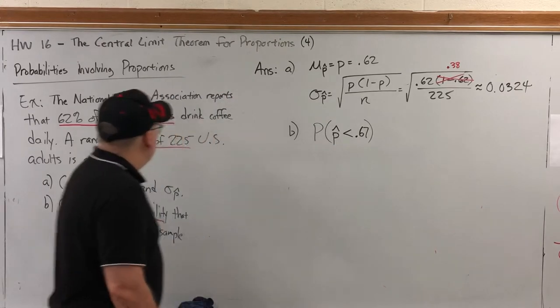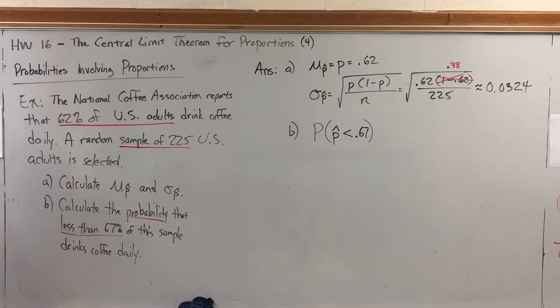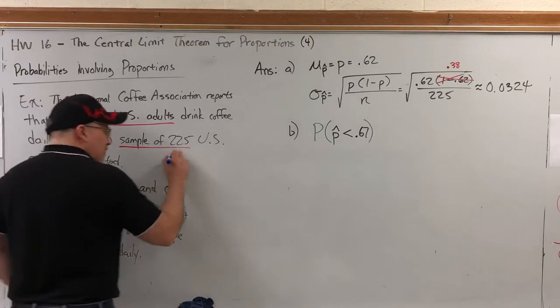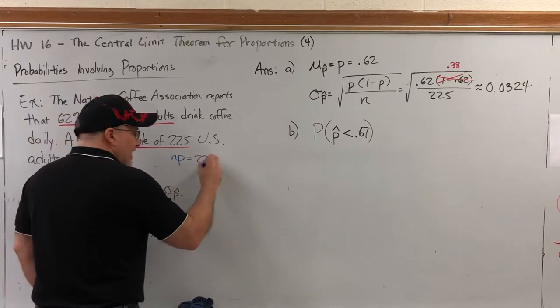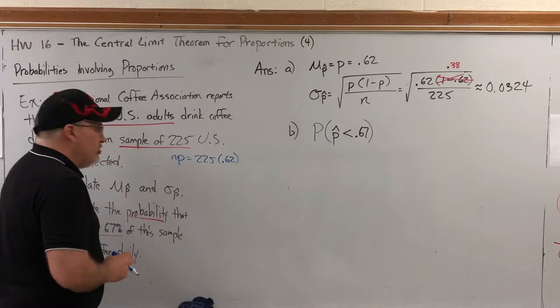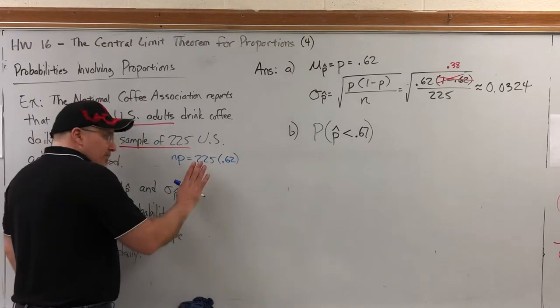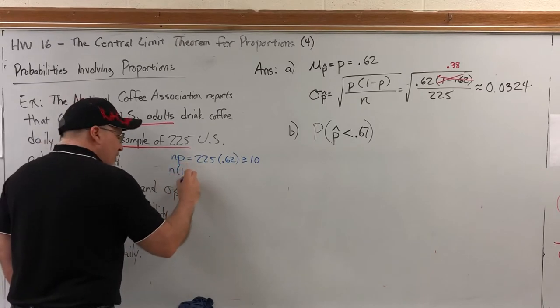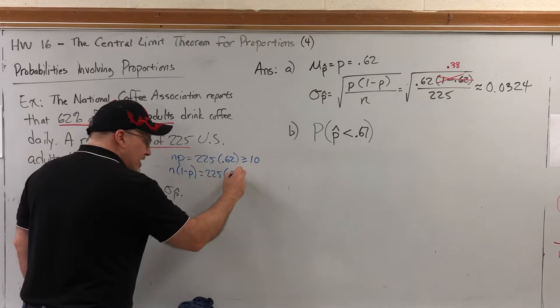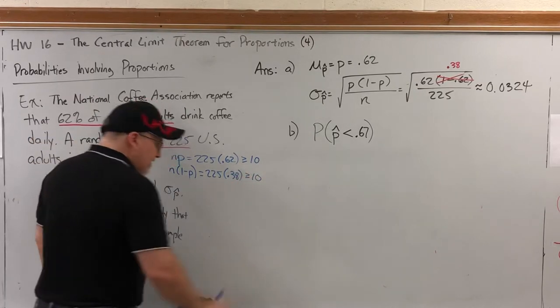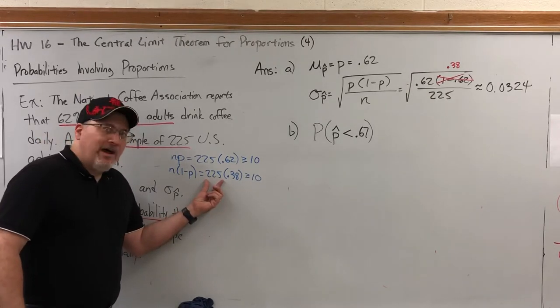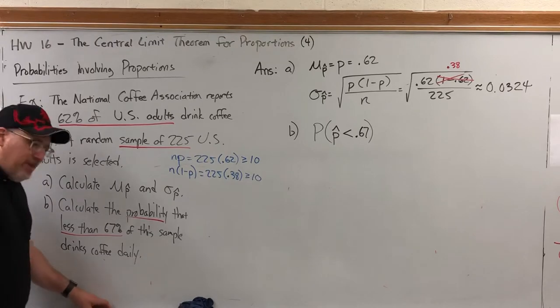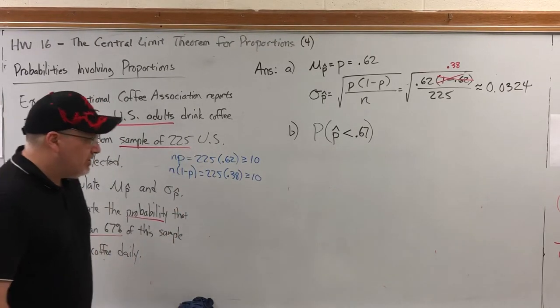So the probability question we're attempting to answer is the probability that the percent of this sample that drinks coffee daily is less than 67%. Can we use the z-chart on this? No, this isn't a z. Is this normally distributed? I should have asked that first, but let's just check it real quick. Remember that the criteria for being normally distributed is that n times p is at least 10. n is 225, p is 0.62. I don't know what 62% of 225 is, but I know it's bigger than 10, because 10% of this is 22.5, so 62% would be much more. And the same thing for n times 1 minus p, 225 times 0.38. I'm pretty confident that's also greater than or equal to 10. So what that means is our P-hats are approximately normal. They look like a bell curve, and so we can treat them as such.